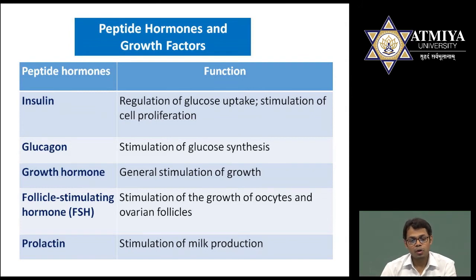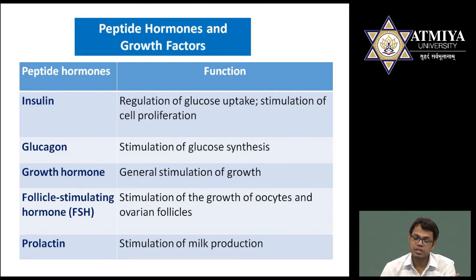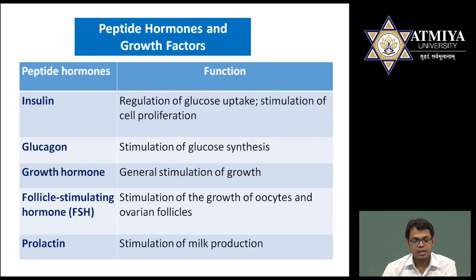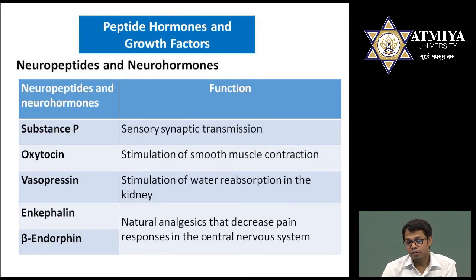Insulin is responsible for decreasing glucose levels by promoting glucose uptake and converting glucose into glycogen. Glucagon is the reverse — it stimulates glucose synthesis. Growth hormone stimulates growth. Follicle stimulating hormone, produced in both males and females, is responsible for the growth of oocytes and ovarian follicles in females and spermatogenesis in males. Prolactin is an important hormone responsible for milk production in females.